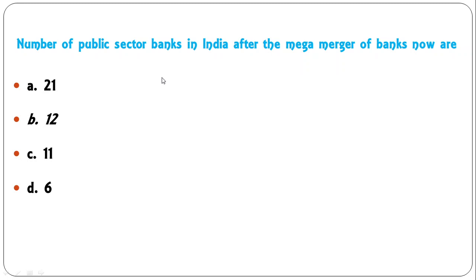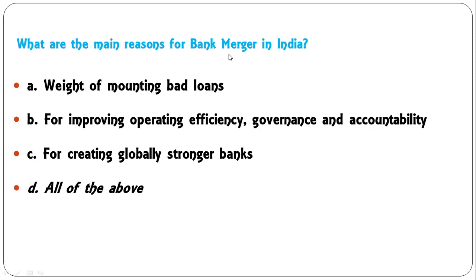Number of public sector banks in India after the mega merger: options 21, 12, 11, or 6. After the merger, the number of total public sector banks has come down to 12. What are the main reasons for bank mergers in India? Options: weight of mounting bad loans, improving operating efficiency, governance and accountability, creating globally stronger banks, or all of the above. All of the above are reasons for the bank mergers in India.